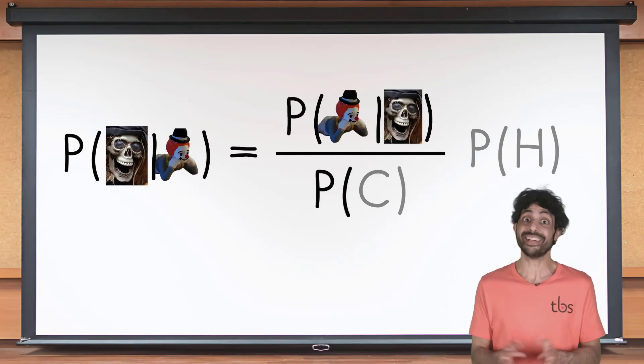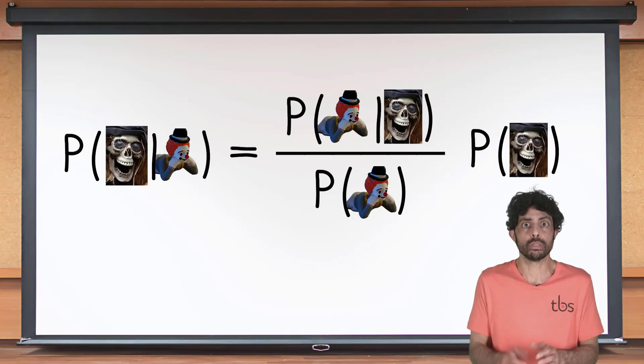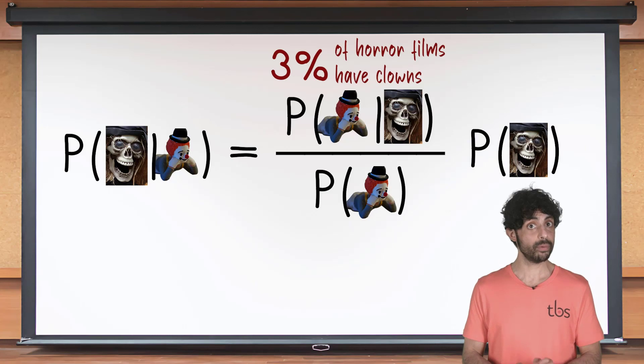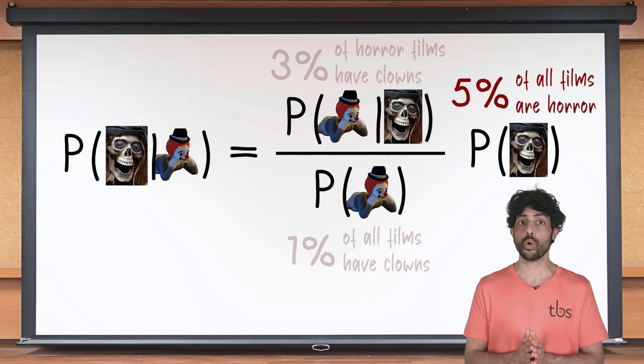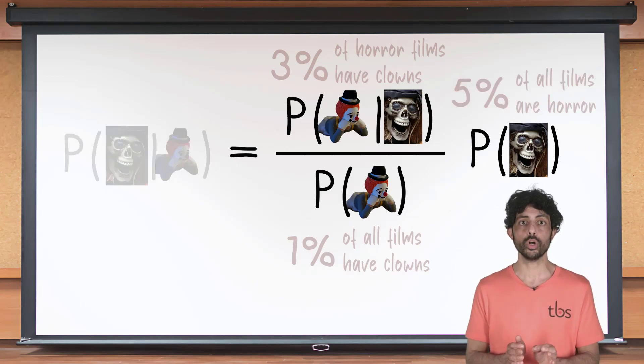Now over the last several years, three percent of horror films have clowns in them, but only one percent of all films do. And we also know that in general the probability of a film being horror is five percent.